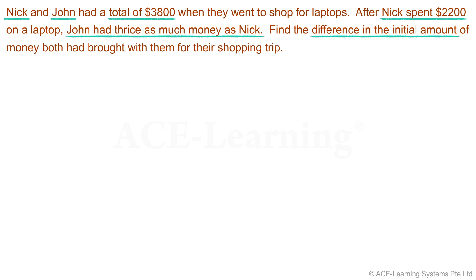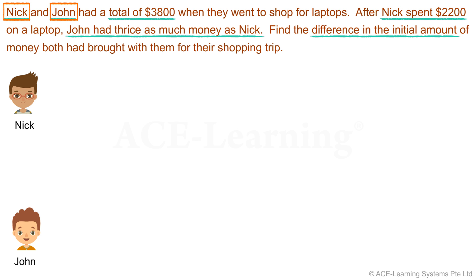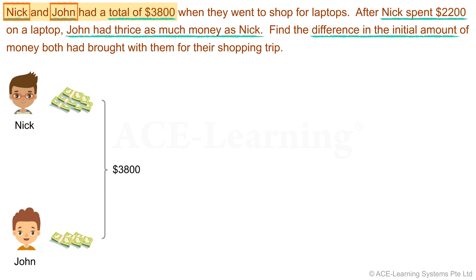Before we start on the solution, we should understand the problem first. Let us draw a diagram to help us. Who are the people involved? We have Nick and John. How are the two of them connected in this problem? Nick and John had a total sum of $3,800. We do not know how much money each has, but we know that they have different amounts of money as the question asks us to compare their initial amounts.